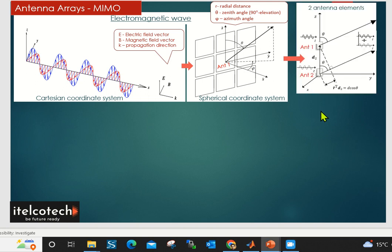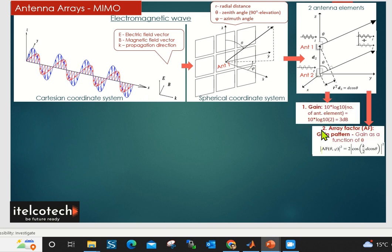We are considering an example of two antenna arrays here, two antenna elements, and how it is going to change the gain and the pattern as compared to that of a single antenna element. The gain is a logarithmic value. As we keep on increasing the number of antenna elements, it will give us higher gain. Compared to a single element, it will give double the gain or double the transmit power at a particular place.